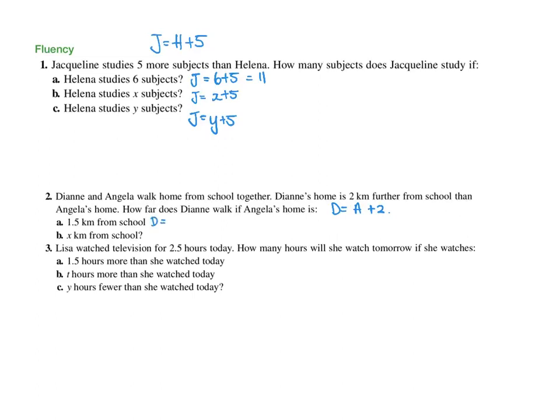Well, Diane would walk 1.5 plus 2, which is 3.5. If Angela's was X, so it would just be X plus 2.